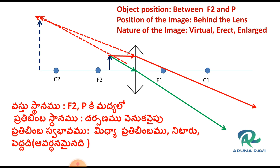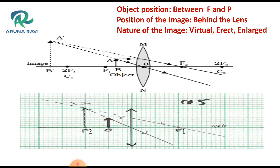The image formed is virtual, erect, and enlarged — a magnified image formed behind the lens. The position of the object is between F2 and P (the pole). When the object is placed between F2 and P, we get a virtual, enlarged image using a convex lens. The image is formed behind the lens on the same side as the object.